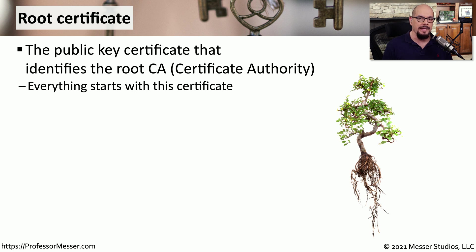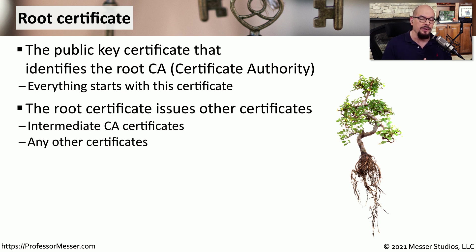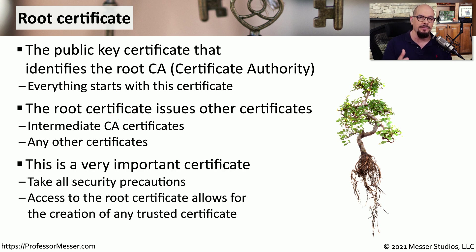If you're building out a public key infrastructure, you start with a certificate authority, and that certificate authority needs a starting point — a root certificate. All signatures and additional certificate authority certificates start from this root certificate. If you're building out an intermediate CA and leaf CAs beyond that, you will sign everything downstream from the root certificate. This is an incredibly important certificate — it is the foundation of your PKI. If someone were to gain access to this root certificate, they could create any type of certificate for your organization, which is why there is so much emphasis on its security.